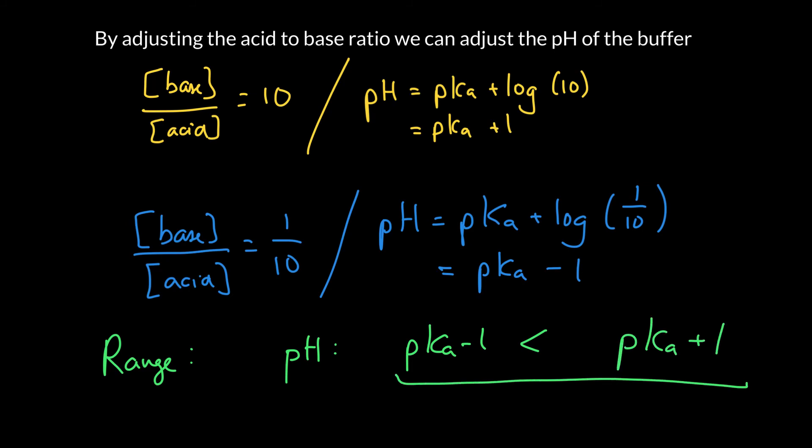So we really want our buffer somewhere in this range. And so if we're in the middle of the range, so if the pH is equal to the pKa, then we've got equal amounts of acid and base. But we can adjust it if we have, for instance, 10 times more base than acid in our buffer. We can have a pH 1 unit above. And if we have 10 times more acid than base in our buffer, we can have a pH 1 unit below.